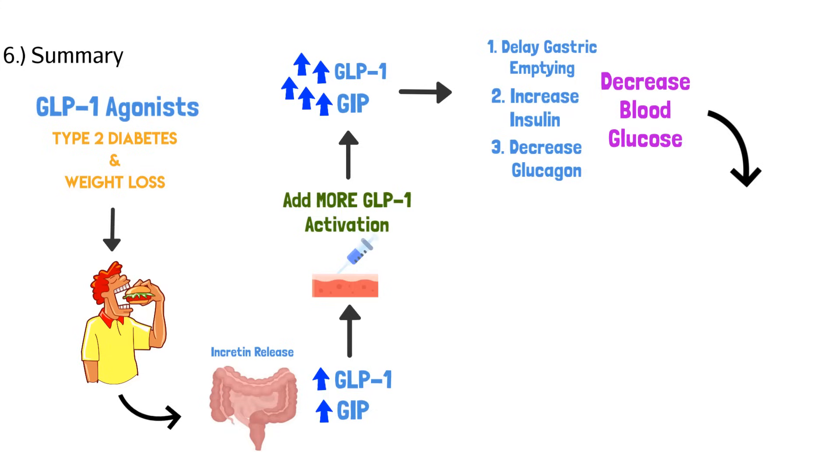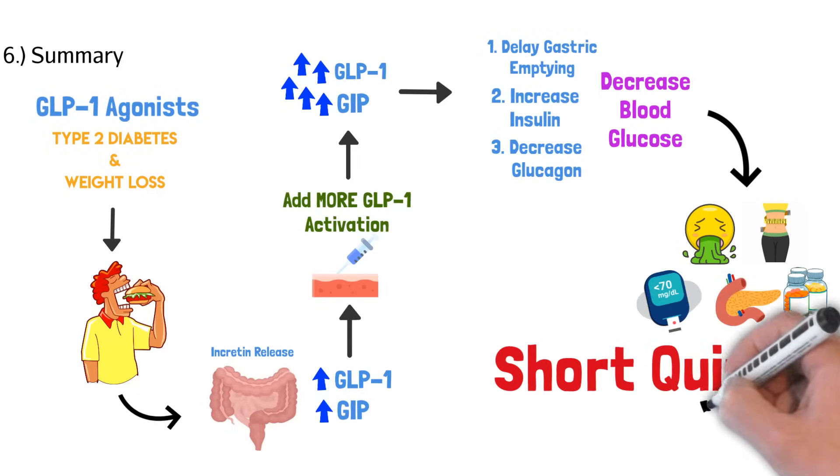Then we talked about the side effects and the biggest one is nausea or upset stomach. We have weight loss, that hypoglycemia or low blood sugar in that rare one, pancreatitis, as well as a drug-drug interaction to not use these drugs with a DPP-4 inhibitor. So that's everything. Let's take a short quiz to see what we retained.